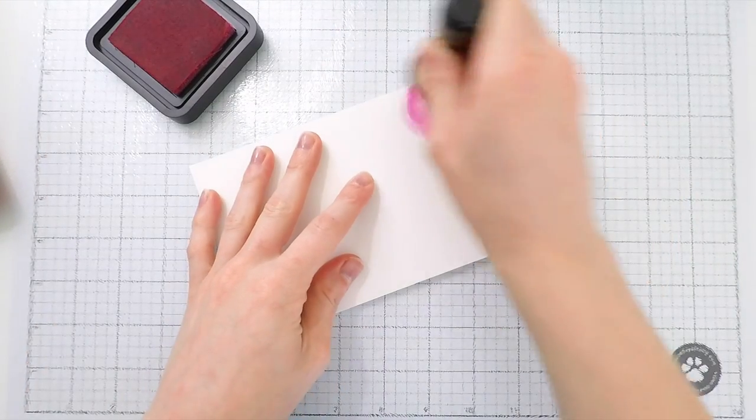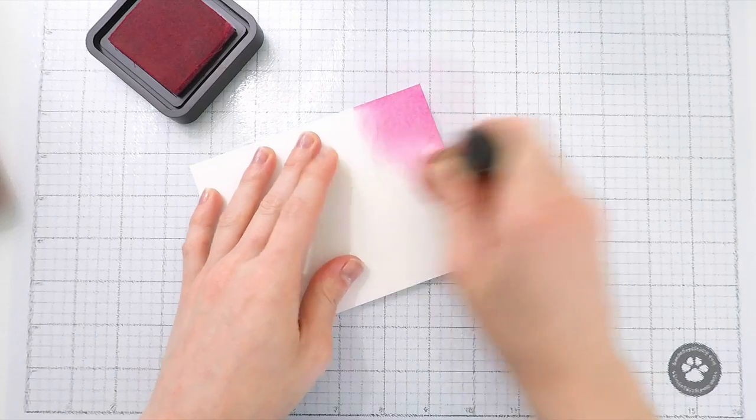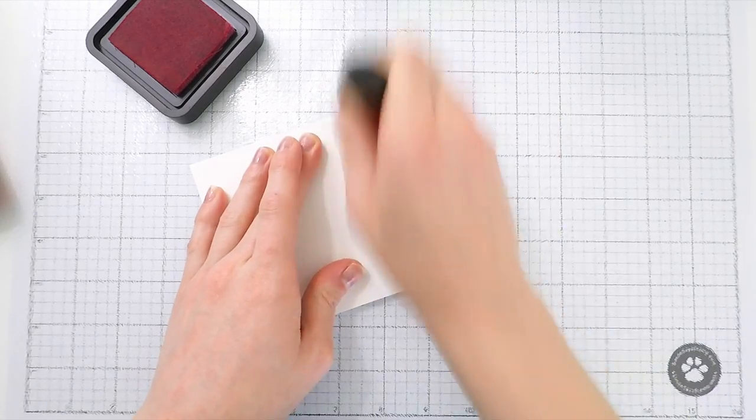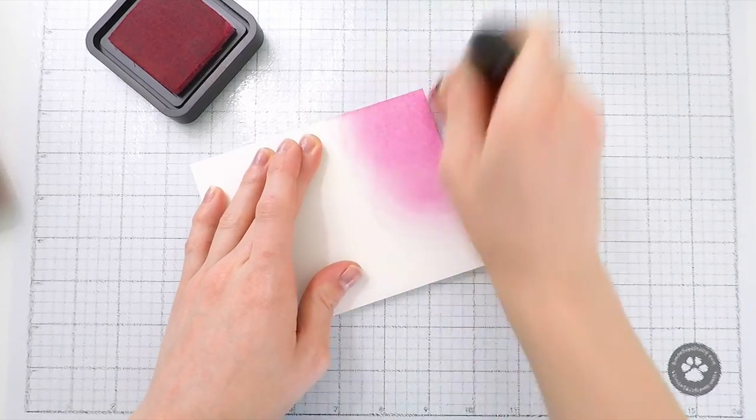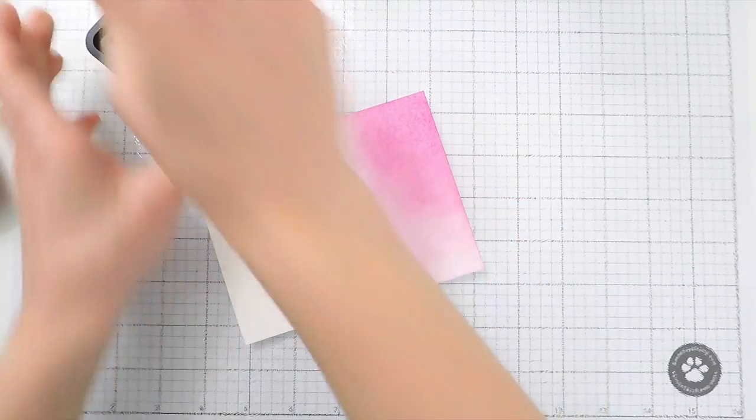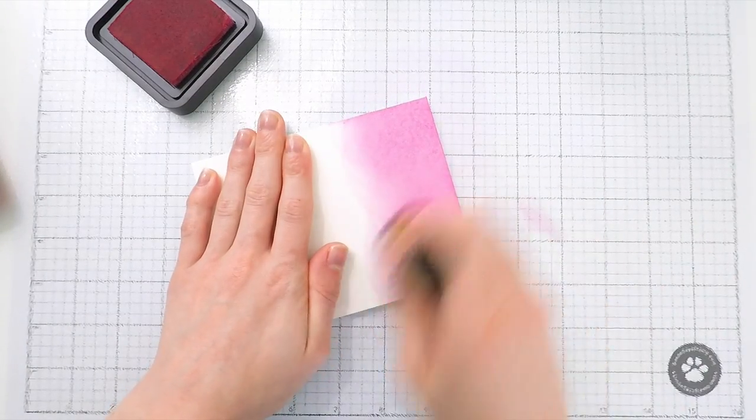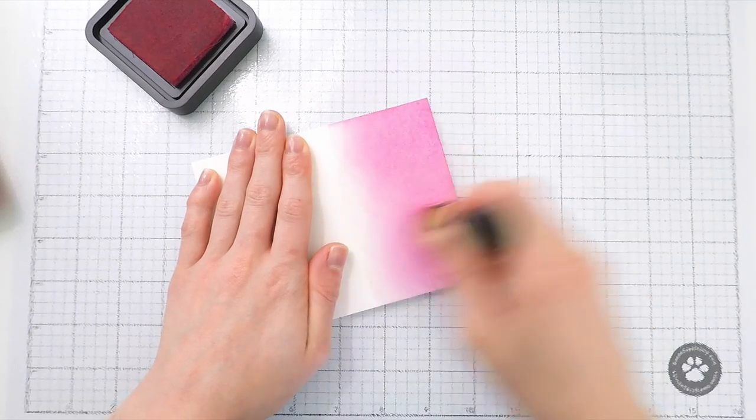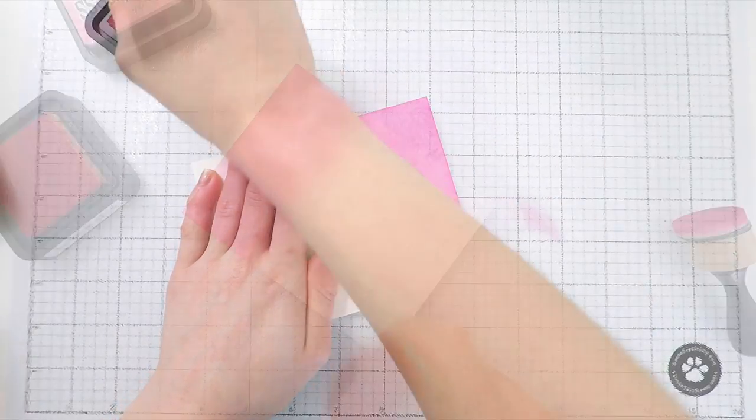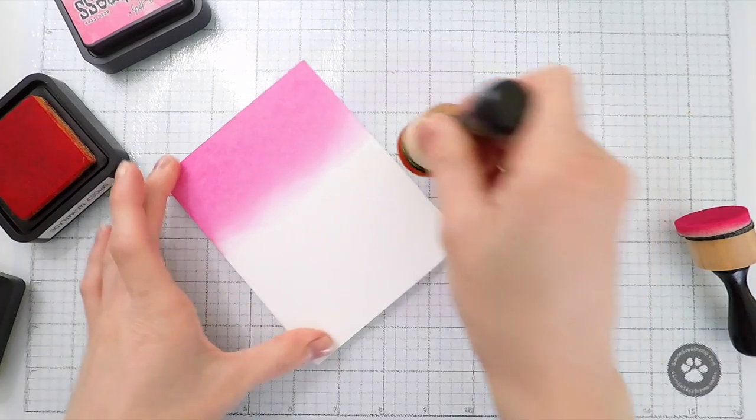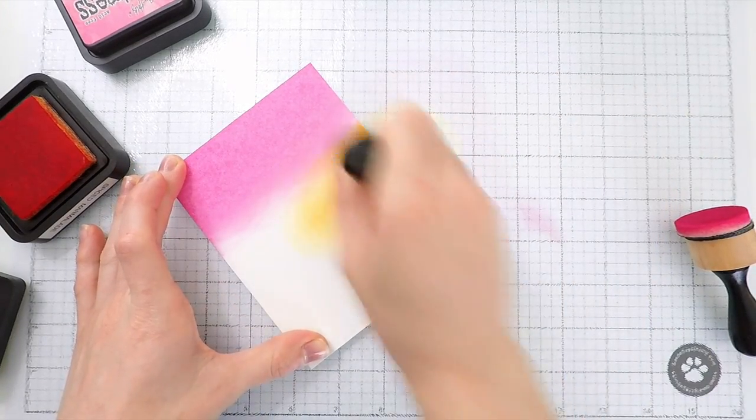What I'm doing here is I've got a piece of bristol smooth paper because this holds the ink really nicely and is very easy to blend on. I'm going to be blending two different colors of distress inks. I've got picked raspberry and I'm also going to bring in some spiced marmalade. I'm blending the colors to create a gradient between pink to yellow and then back to pink again across this card panel.